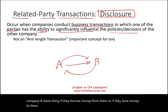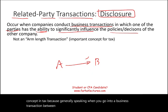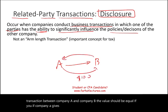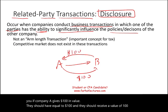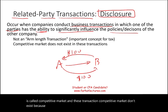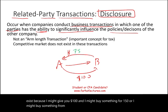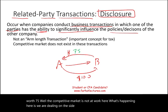We call this a non-arm's-length transaction, and this is an important concept in tax. Generally speaking, when you go into a business transaction between Company A and Company B, the value should be equal — if Company A gives $100 in value, they should receive $100 in return. This is called a competitive market. In a related party transaction, the competitive market doesn't exist, because one party might give $100 but buy something worth $150, or buy something for only $75. The price is being determined by the parties themselves, not the market.